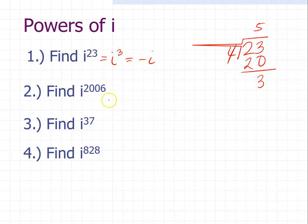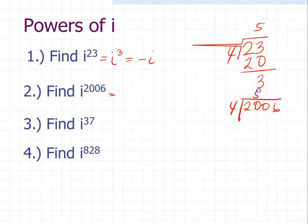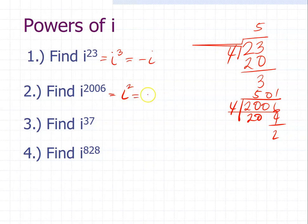The next example: i raised to the power of 2006. Dividing 2006 by 4 gives 501 remainder 2. Therefore, i raised to the power of 2006 equals i squared, which equals negative 1.